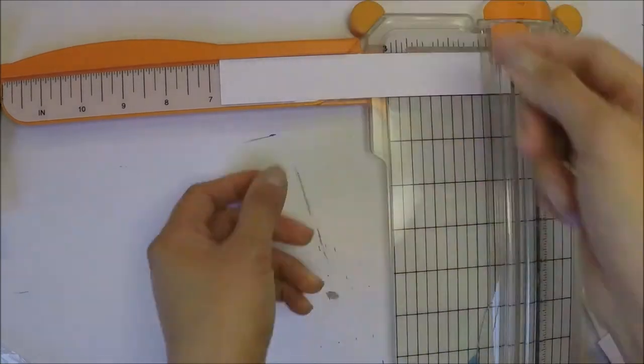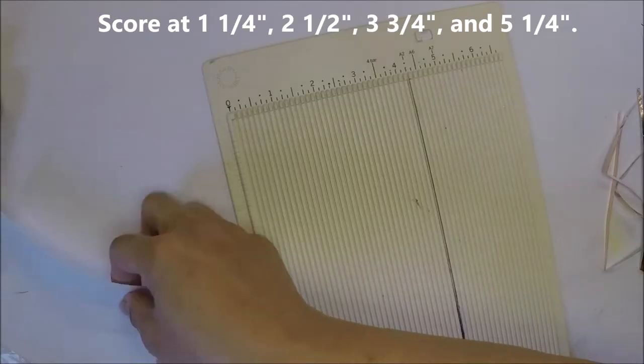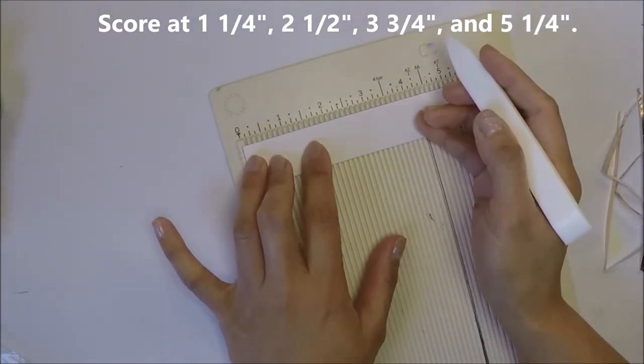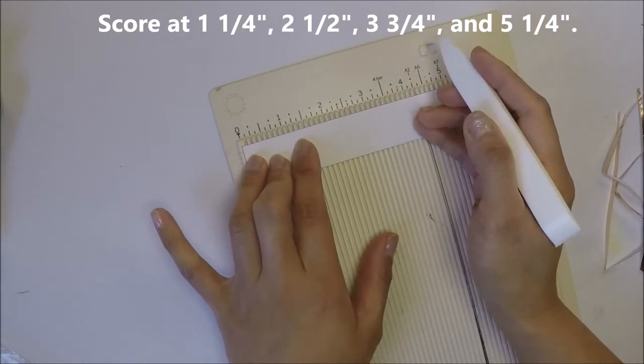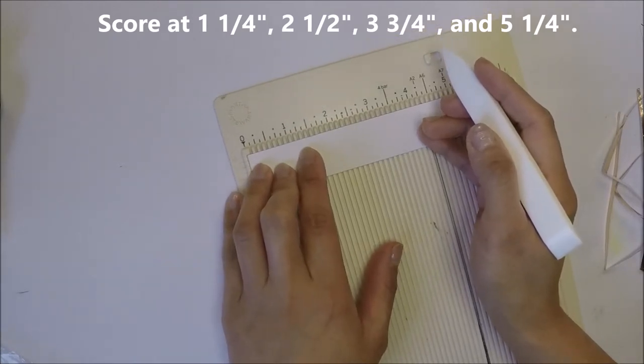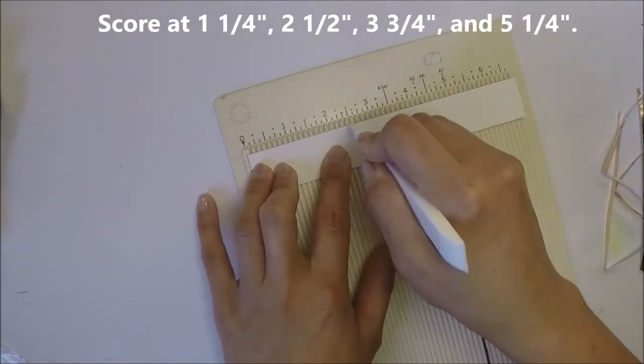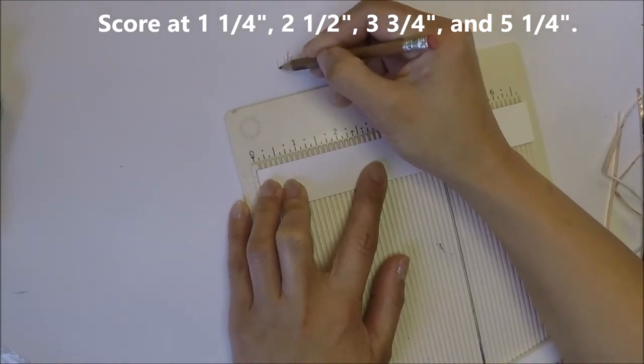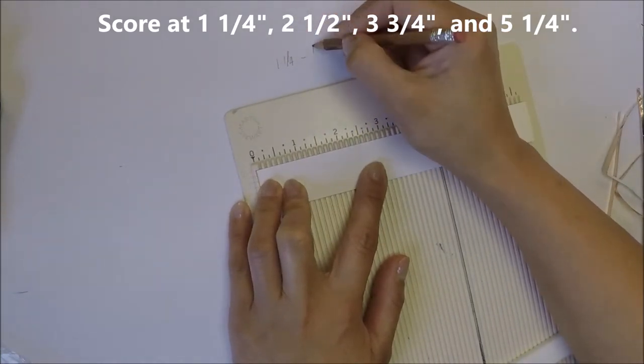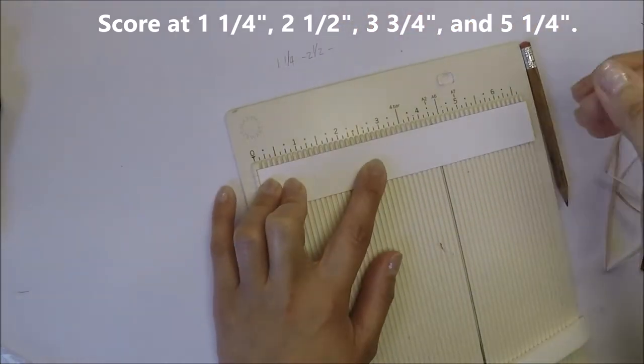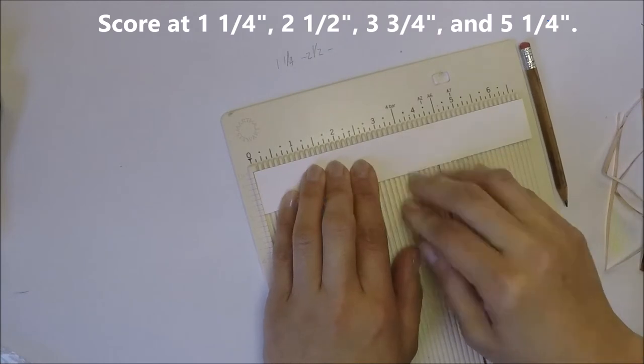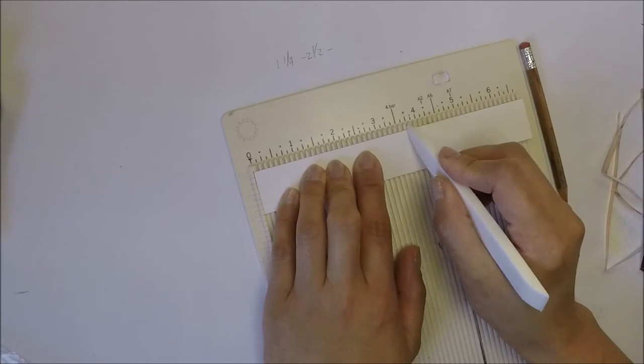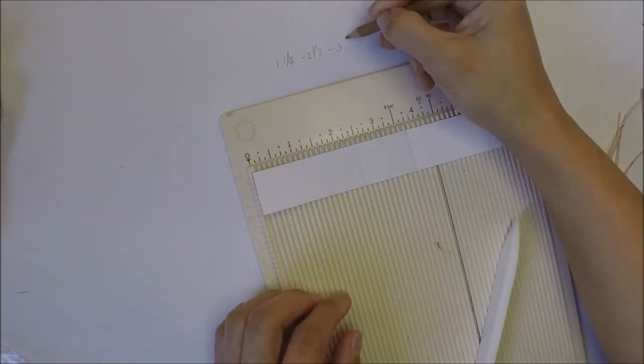I cut the strip of paper to 1 inch by 6 and 3/4 inches, and then we are going to score at 1 and 1/4, 2 and 1/2, 3 and 3/4, and 5 and 1/4 inches. This battery holder is not my original idea. I got the measurements from Joo Yun Lee. I don't know if that's how you pronounce her name. She is on Instagram and I will leave a link of her Instagram account in my description box below.